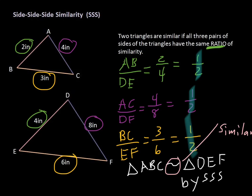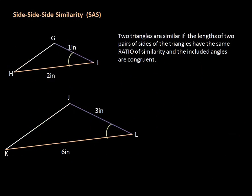The next one is the Side-Angle-Side similarity property. Again, it sounds exactly like the congruence version except it involves the ratio of the sides. We've got GI to JL, which is one to three — already fully reduced.